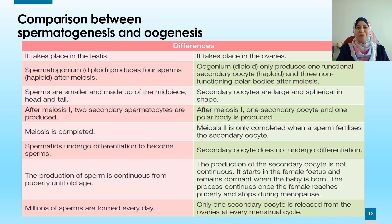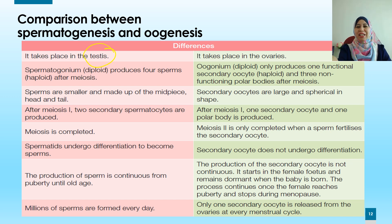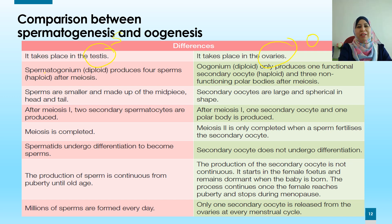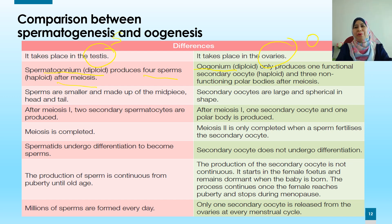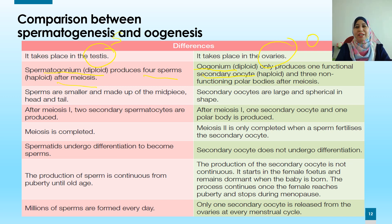Now the differences between spermatogenesis and oogenesis. First, spermatogenesis takes place in the testis, whereas oogenesis takes place in the ovary. Second, spermatogenesis produces four sperm after meiosis, whereas oogenesis produces only one functional secondary oocyte and three non-functioning polar bodies after meiosis.